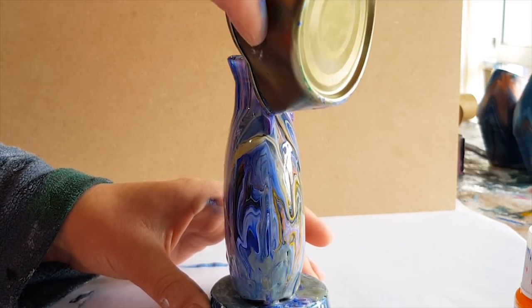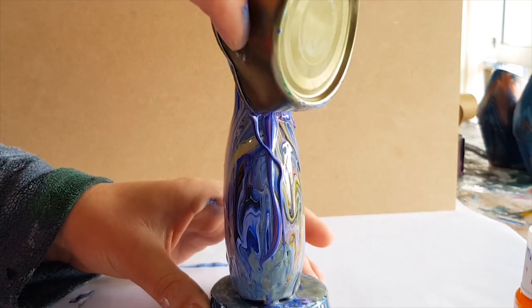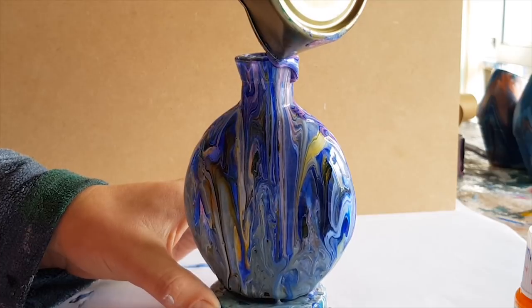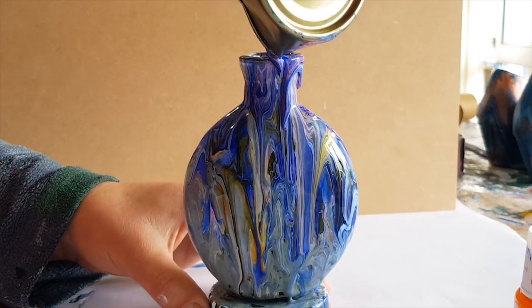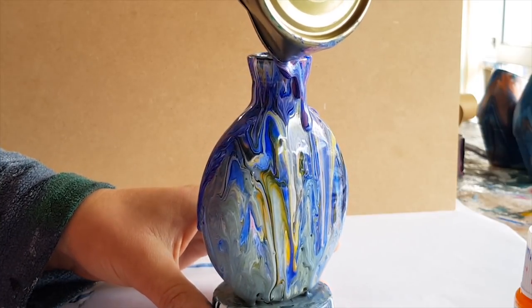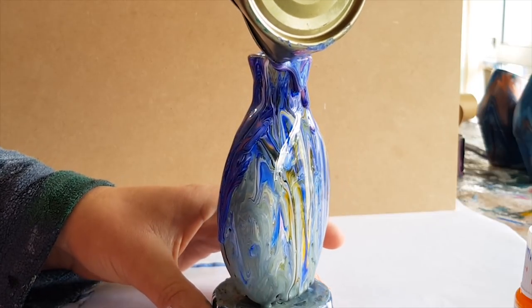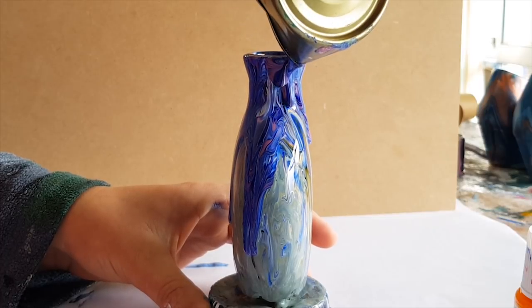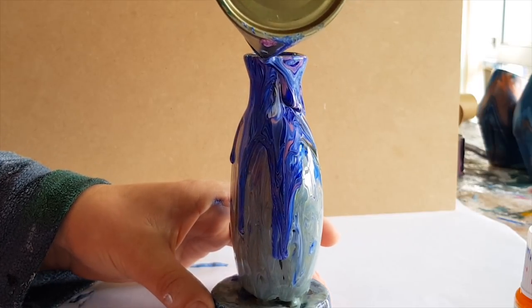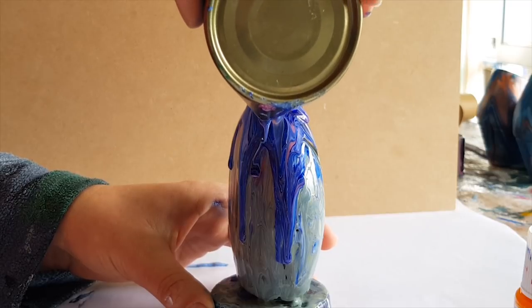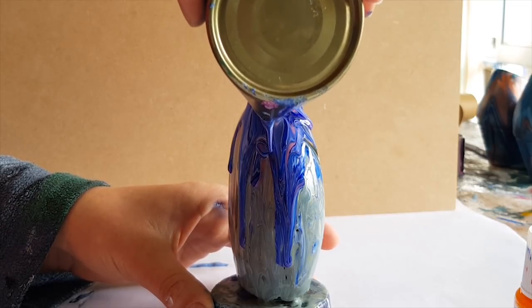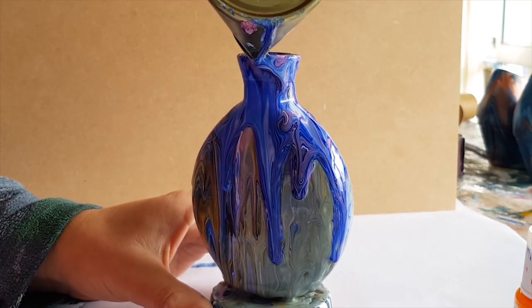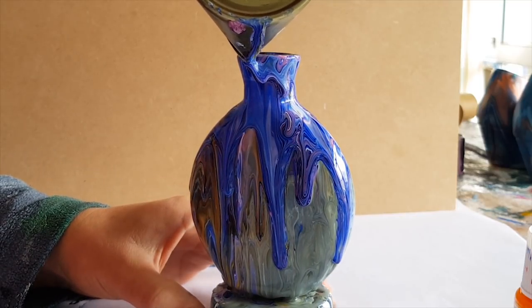Are we ready? Let's see what we can create now. There you go. I'm just kind of forcing it to go down the shoulder of the bottle. There's areas of a bottle this shape that just won't naturally get covered if you just go around the round rim.